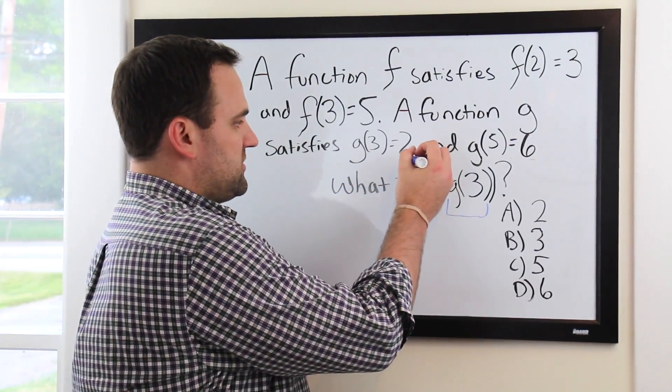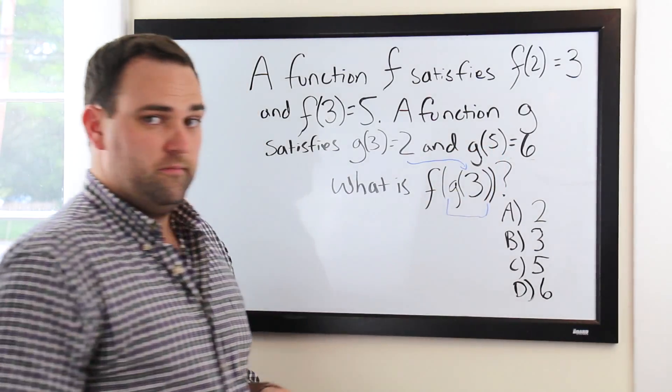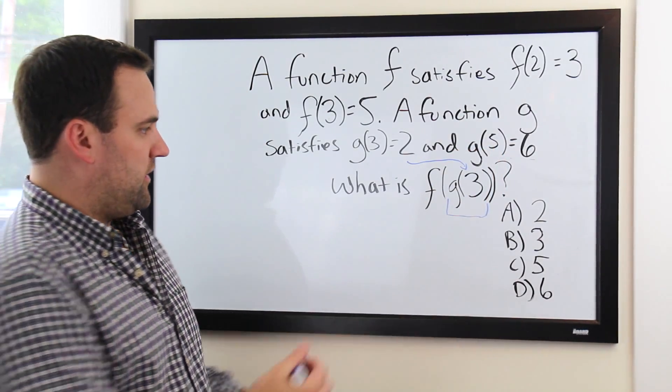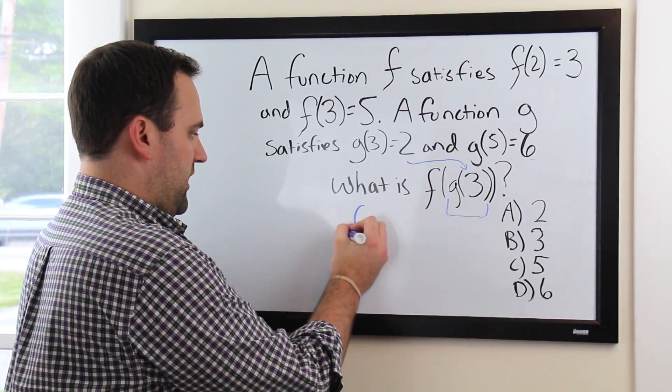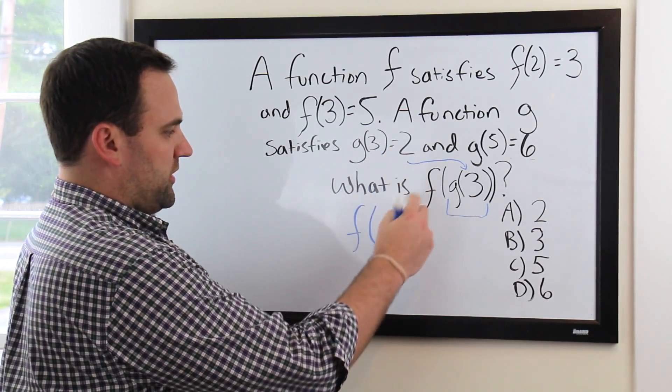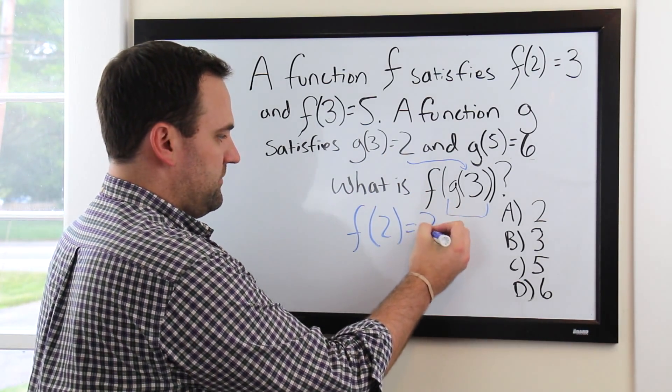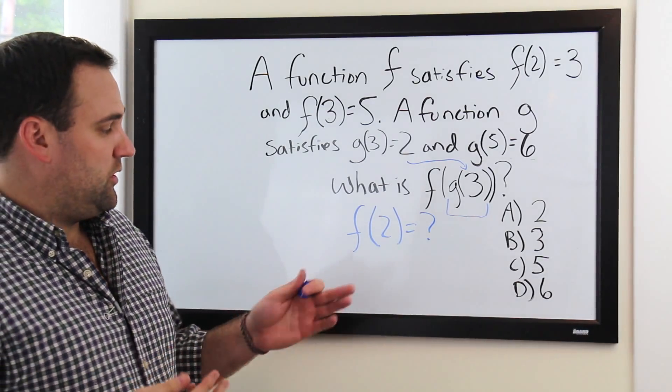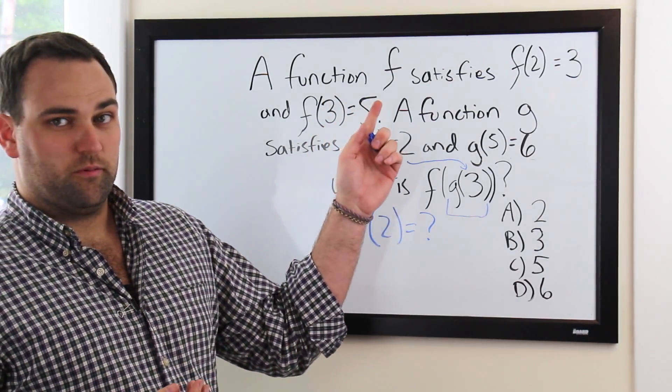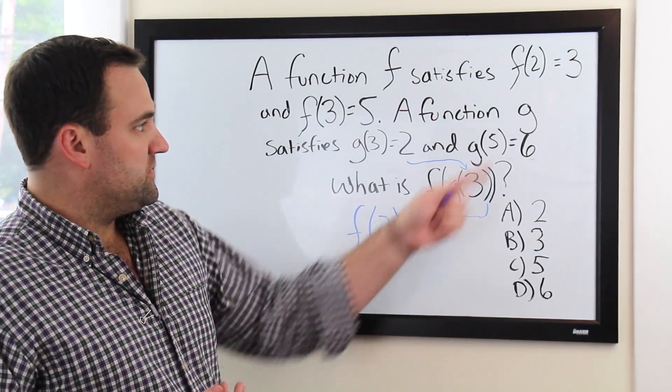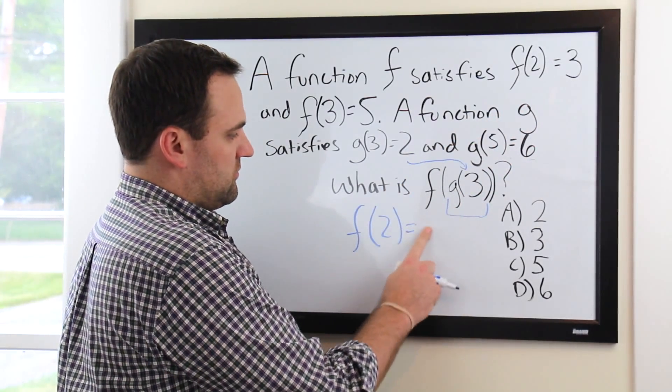So, we can substitute in a 2 for g(3), and that makes what we're looking for now f of 2. f(2) equals what? And then again, no math involved. We're just going to go straight back to our problem here. We know that f(2) is equal to 3, right there.